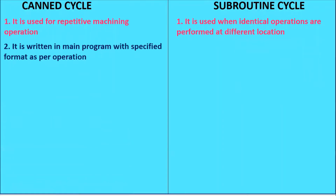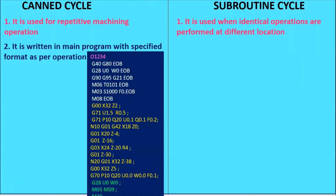In the CAN cycle, it is written in the main program with a specified format as per operation. This is the main program, and in the main program itself we are writing the CAN cycle program. The specified format — for example, G71 is used for the stock removal cycle, or what I can call the multiple turning cycle. The format is given as G71 U dash R dash, and like that the formats are fixed.